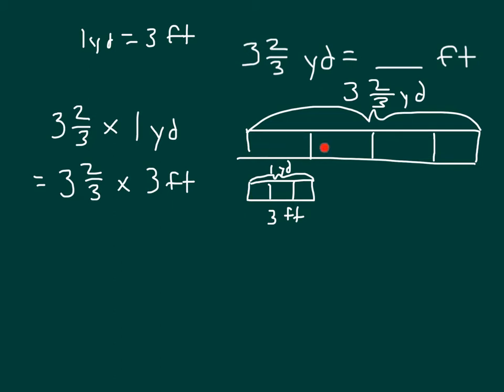So that's three, six, nine feet, ten feet, and eleven feet. Working this out, what we actually did here is that we made each of those wholes into thirds by writing this as an improper fraction. Three times three is nine, plus two is eleven.